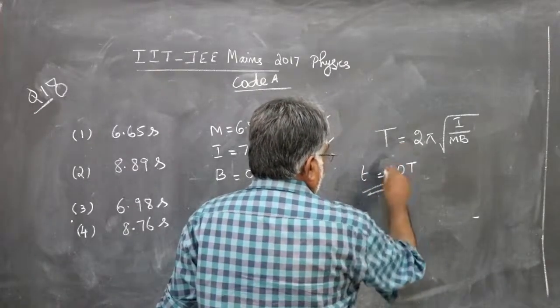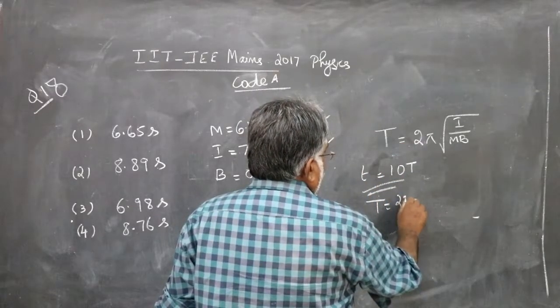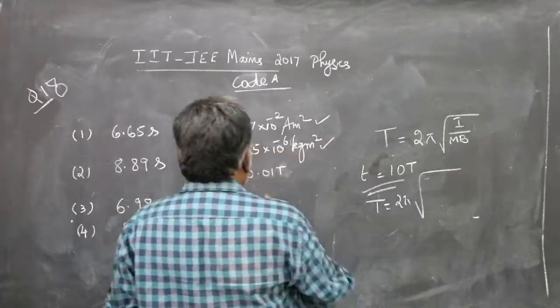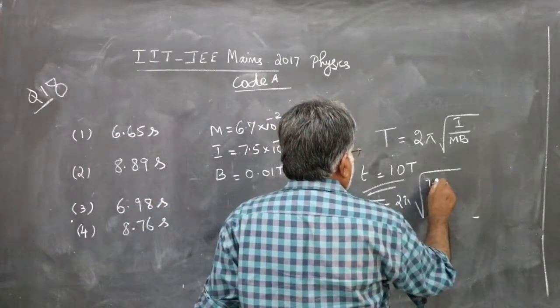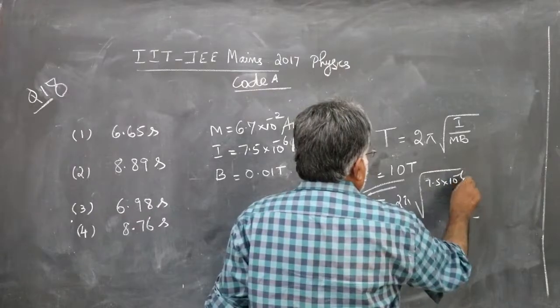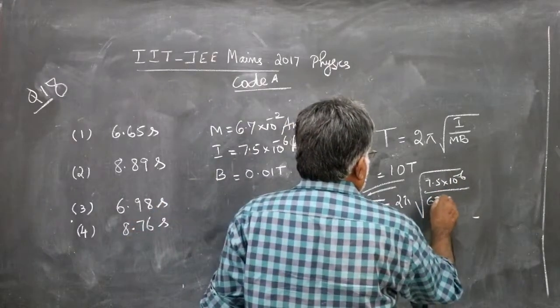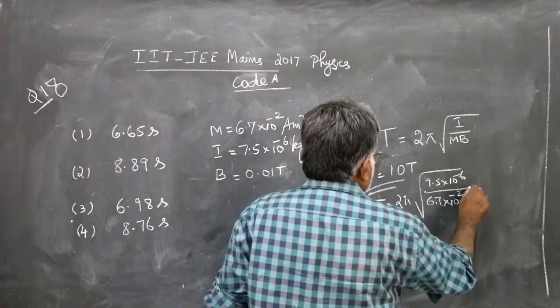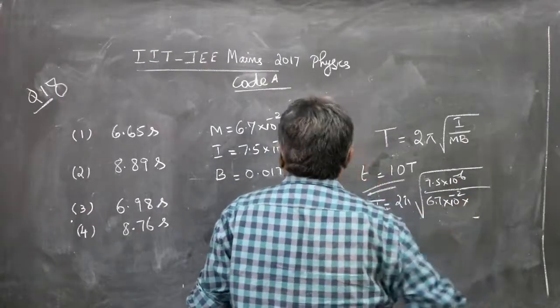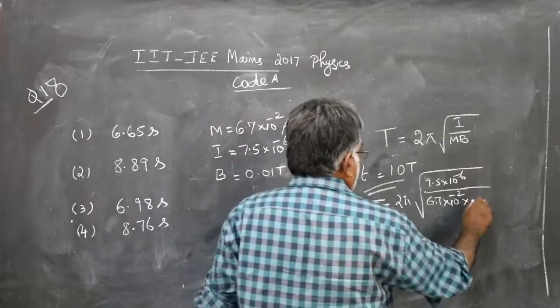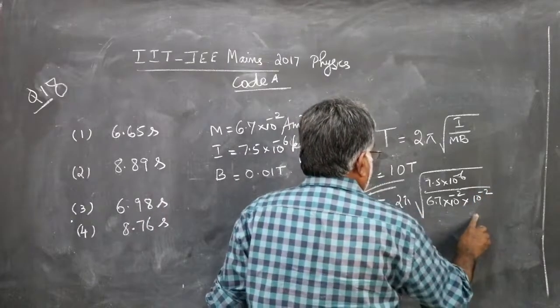Therefore, first to find T: T = 2π√(I/mB) = 2π√(7.5×10⁻⁶ / (6.7×10⁻² × 0.01)). Note that 0.01 tesla is 10⁻² tesla.